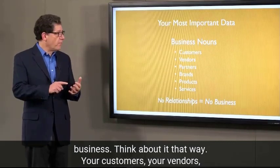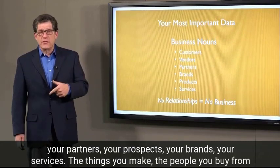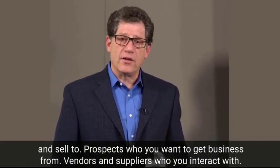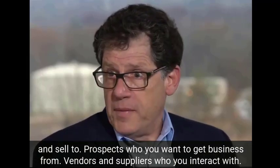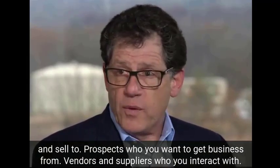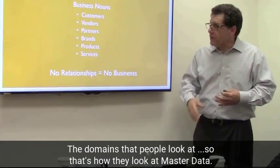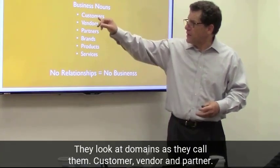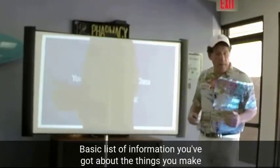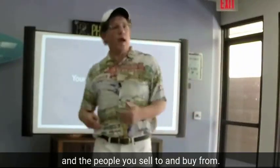Think about it that way — your customers, your vendors, your partners, your prospects, your brands, your services, the things you make, the people you buy from and sell to. Prospects, who you want to get business from. Vendors and suppliers, who you interact with. The domains that people look at — customer, vendor, and partner. Basic list of information you've got about the things you make and the people you sell to and buy from.